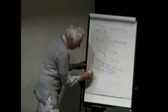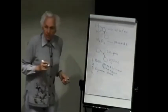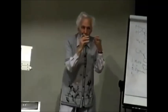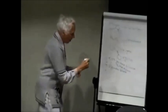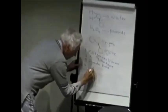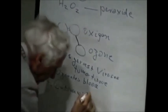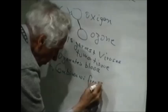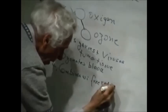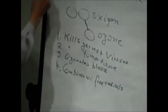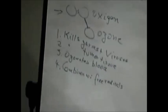And number four, because it's a free radical, it combines with other free radicals and makes toxic free radicals into excretable compounds. So it combines with free radicals. Therefore, this H2O2 and also ozone is very valuable material. We use the peroxide.